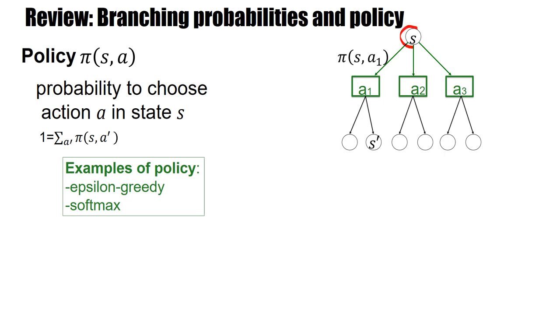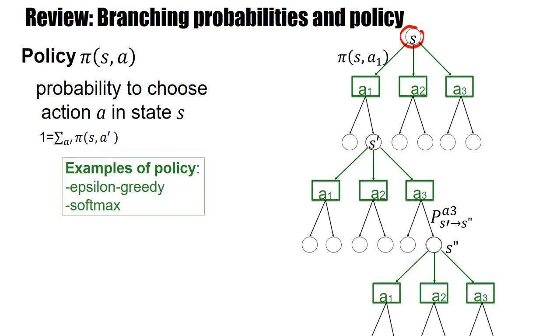We start in the state S and then we have a policy for choosing different actions. Most often it's a stochastic policy such as Epsilon Greedy or Softmax. And then we go from one state to the next state from state S prime to some other states. And so the first aspect of stochasticity and the first branching ratio corresponds to these policies.